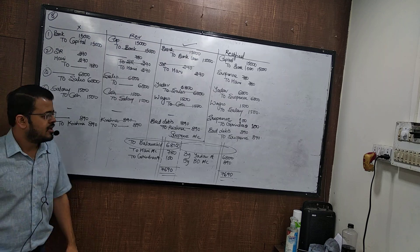Sixth error: amount due from Krishna of 890 was written off as bad debts, but the same was not posted to bad debts account. Correct entry: bad debts to Krishna 890. Error is in bad debts account only. This is partial omission. Wrong: dash to Krishna. Reverse: Krishna to dash. Rectified: bad debts to suspense, 890.